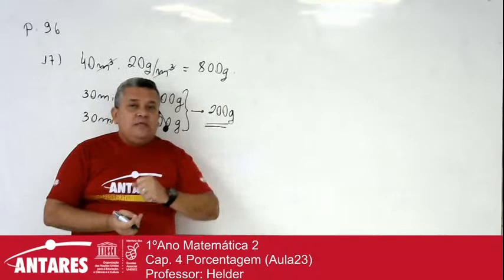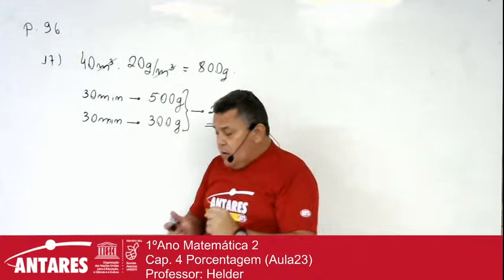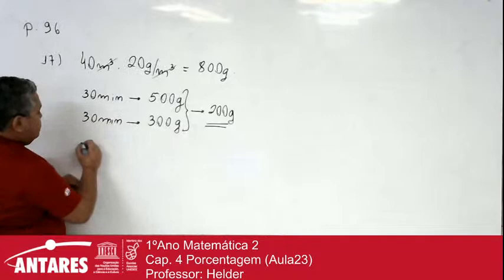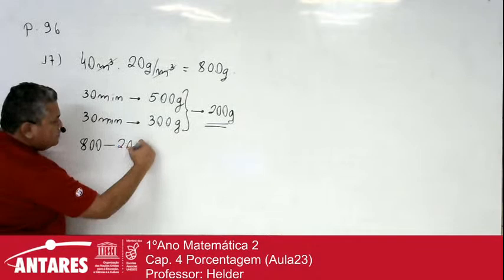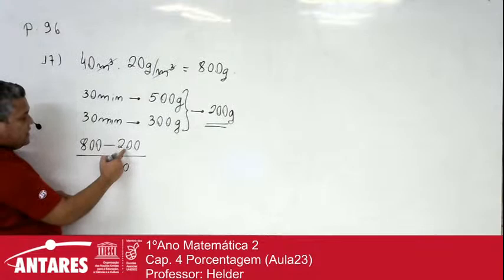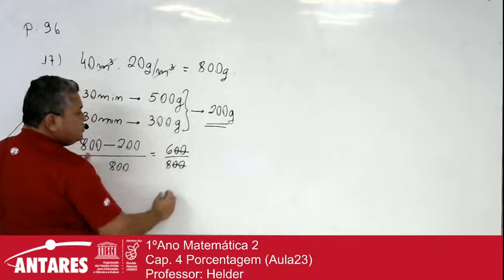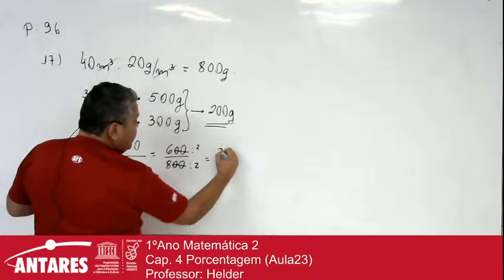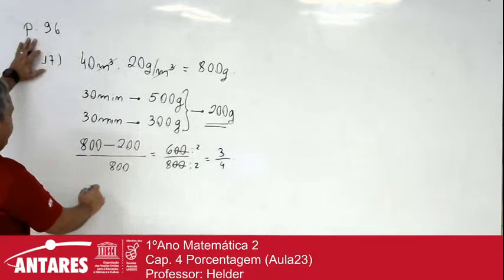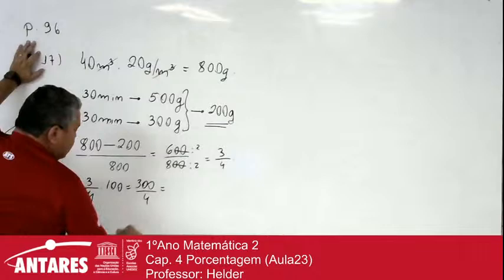Ele quer saber a umidade relativa do ar — vamos para a taxa de variação percentual. No início do processo nós tínhamos 800 gramas; foram retirados 200 gramas. Como eu quero saber a porcentagem, eu divido pelo que eu tinha: 600 sobre 800. Os dois zeros vão embora — fica 3 quartos. Multiplicando por 100: 3 vezes 100 é 300, dividido por 4, vai dar 75%. A umidade relativa nesse ambiente ficou em 75%.